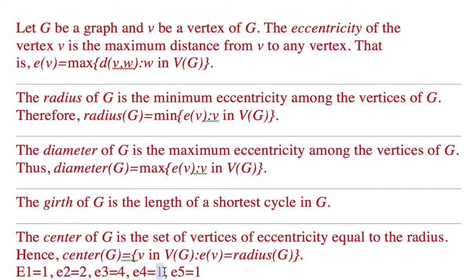The radius will be 1. The number of vertices having eccentricity equal to the radius is three: e1, e4, and e5. So v1, v4, and v5 have eccentricity equal to the radius, which is 1.